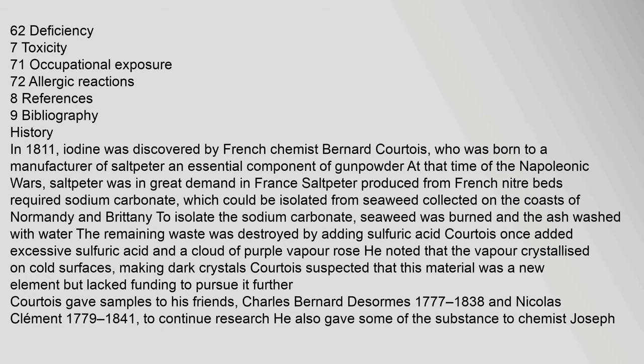History: In 1811, iodine was discovered by French chemist Bernard Courtois, who was born to a manufacturer of saltpeter — an essential component of gunpowder at the time of the Napoleonic Wars. Saltpeter was in great demand in France. Its production from French nitre beds required sodium carbonate, which could be isolated from seaweed collected on the coasts of Normandy and Brittany. To isolate the sodium carbonate, seaweed was burned and the ash washed with water; the remaining waste was destroyed by adding sulfuric acid.